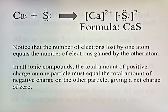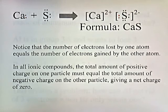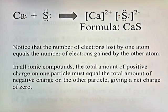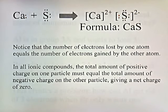Notice that the number of electrons lost by one atom equals the number of electrons gained by the other atom. In all ionic compounds, the total amount of positive charge on one particle must equal the total amount of negative charge on the other particle, giving a net charge of zero.